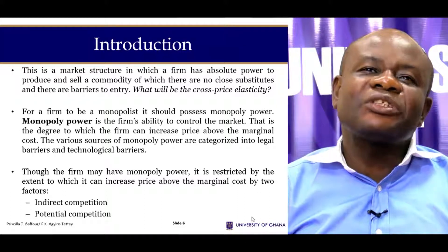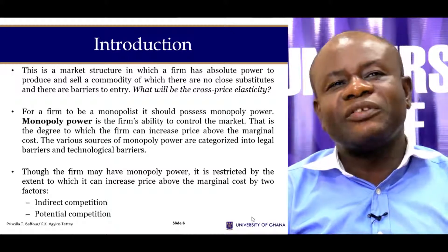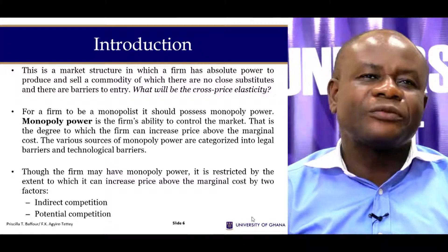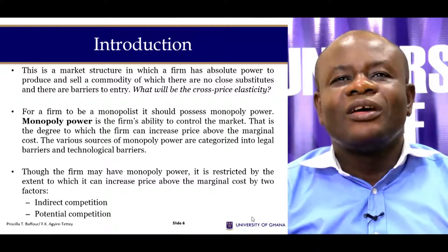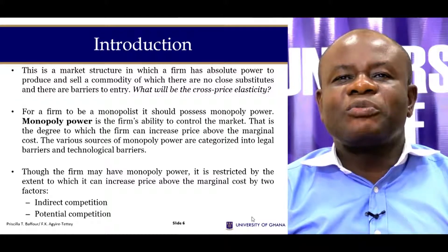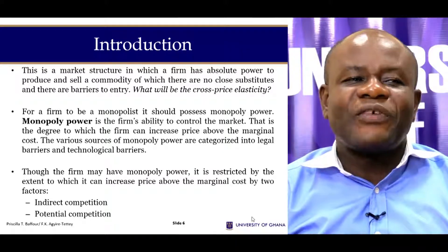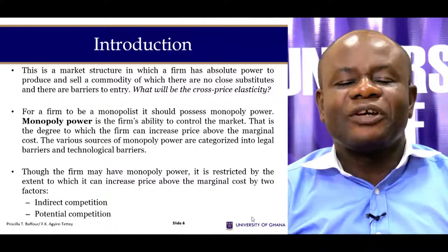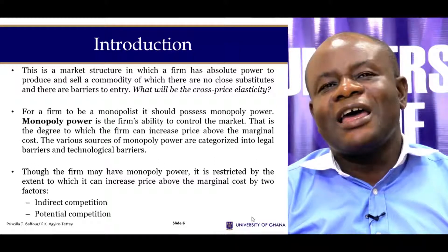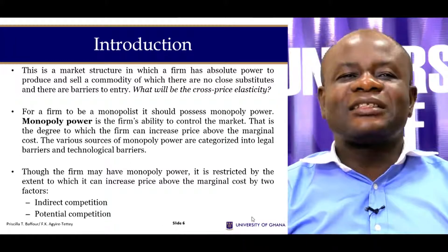Since the firm produces a commodity with no close substitutes, the cross-price elasticity of demand is expected to equal zero. And since the firm is the sole producer, the firm's supply is the same as market supply, and the demand facing the firm is the same as the market demand.